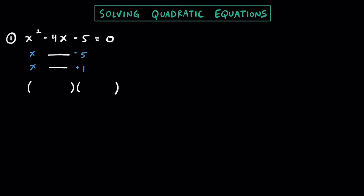Going ahead and setting these binomials up, we know we're going to have x and x as our first terms, and then we're going to have minus 5 along the outers and then plus 1 along the inners. If we go ahead and set these equal to 0, we can say that x would have to equal negative 1, and if we set this equal to 0 we could say that x has to equal positive 5. Those would be the two solutions for this quadratic equation.